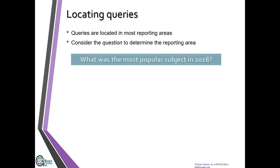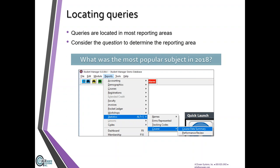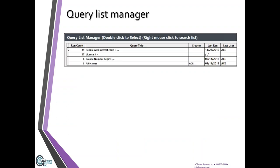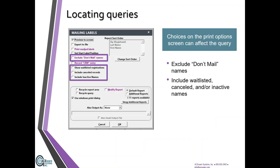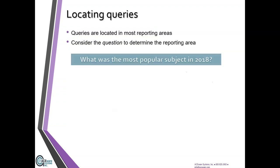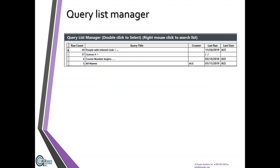If you're thinking about what was the most popular subject in 2018, you might want to go to the statistics reporting area — I find that one is a bit underused, so keep it in your back pocket. Once you've set your report options and click okay, you get to the first official step: the query list manager. You may find that you have hundreds of queries — you can have unlimited amounts, but that doesn't mean you should. We'll talk more about that.